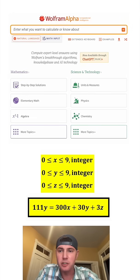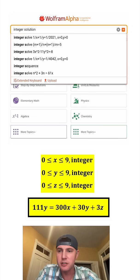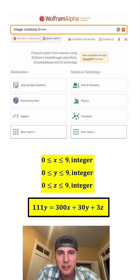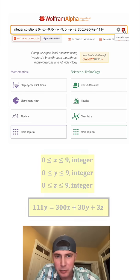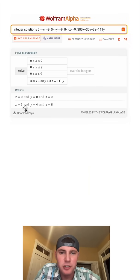So first thing, we want it to be integers. So we're going to type integer solutions. And then we can tell that we want x, y, and z all between 0 and 9. And then we'll put a comma, and we're going to finish with the equation that we had. The 300x plus 30y plus 3z equal to 111y. So now if we hit here to compute the input, it gives us these solutions right here.